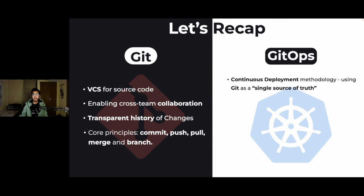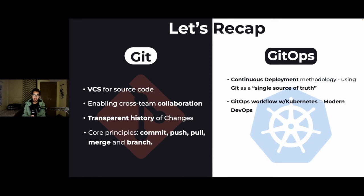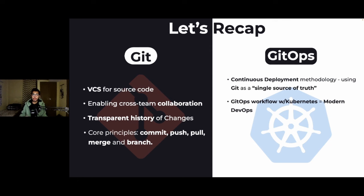When it comes to GitOps, it's basically a continuous deployment methodology that uses Git as a single source of truth — Git is at the center of every GitOps workflow. We're talking about the CD part of the entire CI/CD pipeline. Whenever we talk about a typical GitOps workflow, we talk about it with reference to Kubernetes, because in the modern DevOps environment we are deploying our application to Kubernetes. It doesn't have to be, but that's the most common workflow.